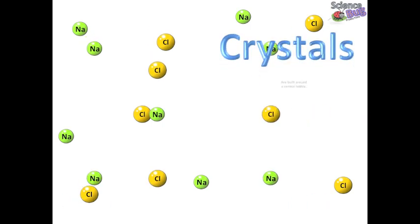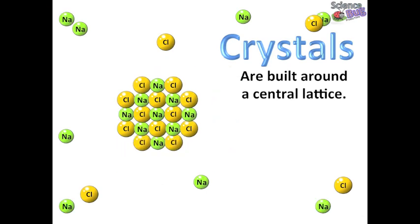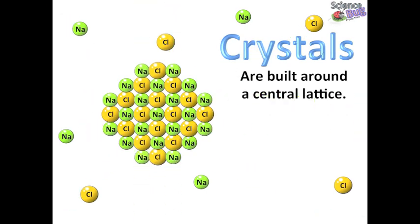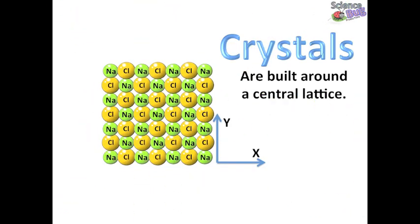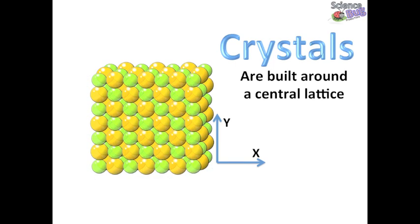To form a crystal you simply repeat this pattern in all directions. In other words, it grows around a central lattice, and of course it grows in all three dimensions.